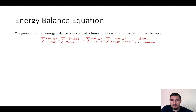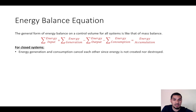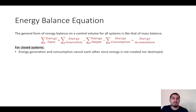We will first talk about closed systems because they are easier. In closed systems, the terms of generation and consumption cancel each other because energy is neither created nor destroyed. If there is a generation, the energy generated is due to energy consumed from another source. So generation and consumption are equal and cancel each other: energy generation equals energy consumption.